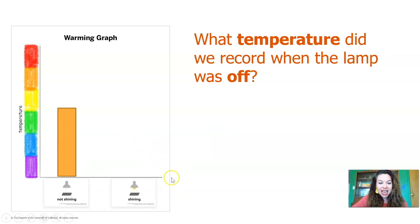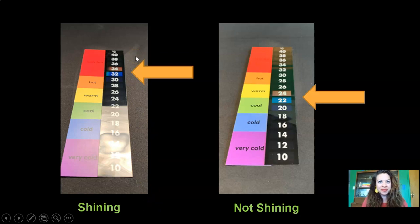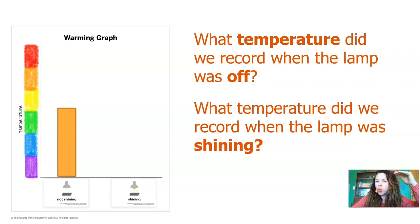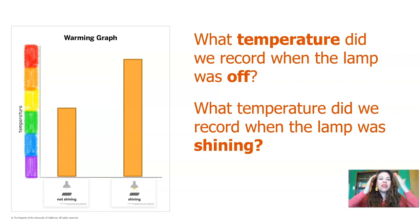Now let's do the side where the lamp was shining. Let's go back and look at our data. Here's where the lamp was shining — the temperature was somewhere in between 32 and 34 degrees. What color does the bar need to go up to? It needs to go up to red, because red indicates very hot. I'm going to add the bar all the way up to red. There it is! When you look at this graph, can you tell whether it was hotter when it was not shining or when it was shining? It was warmer when the light was shining.